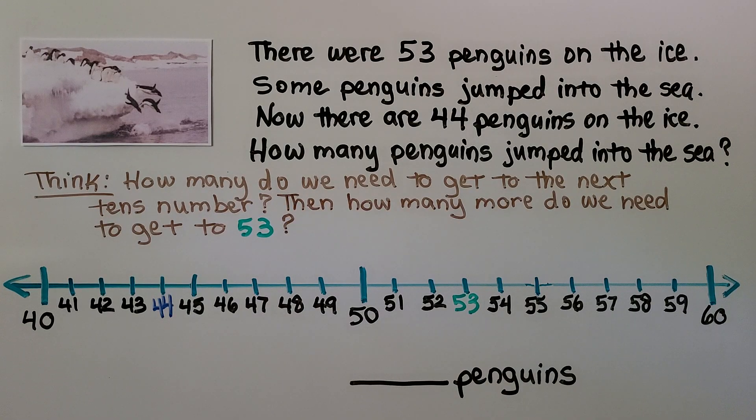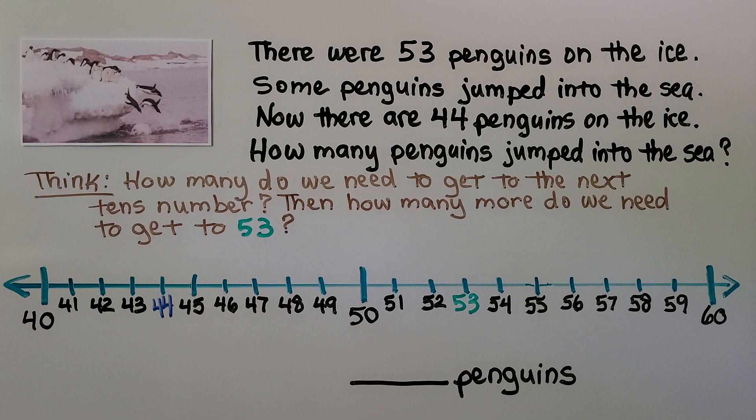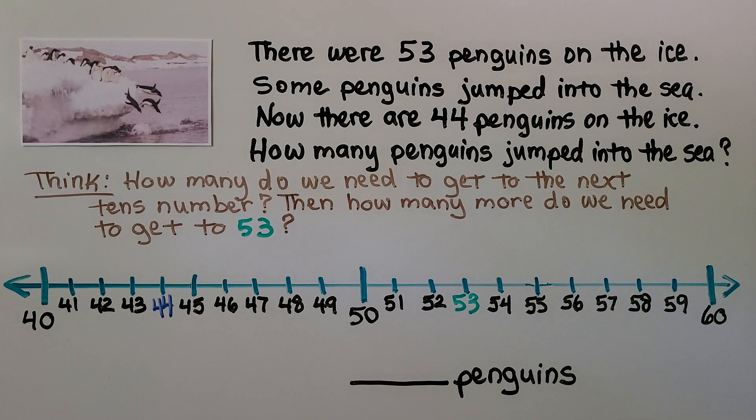There were 53 penguins on the ice. Some penguins jumped into the sea. Now there are 44 penguins on the ice. How many penguins jumped into the sea? So we think, how many do we need to get to the next tens number?